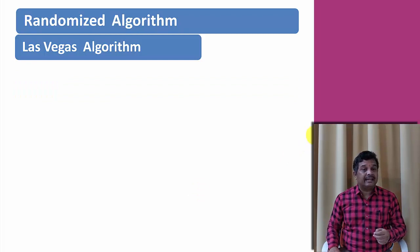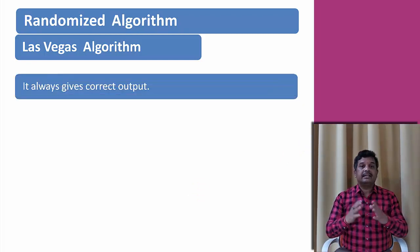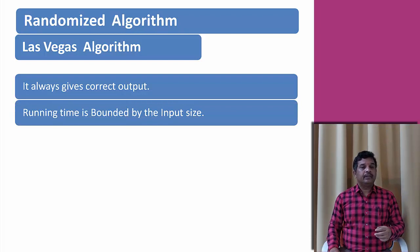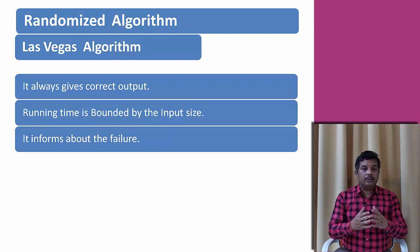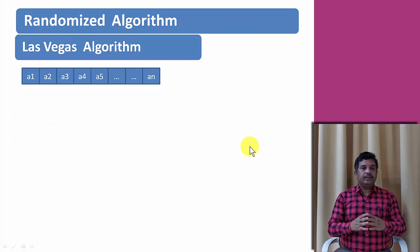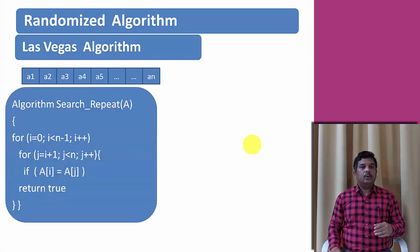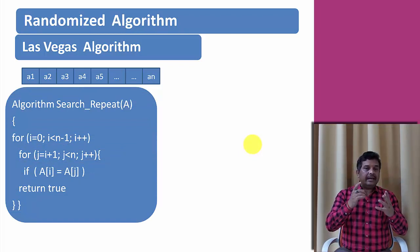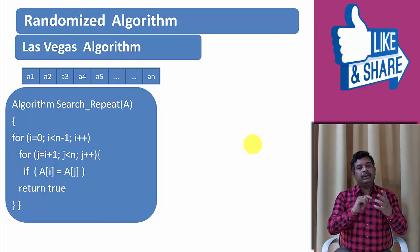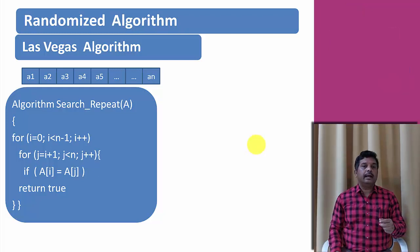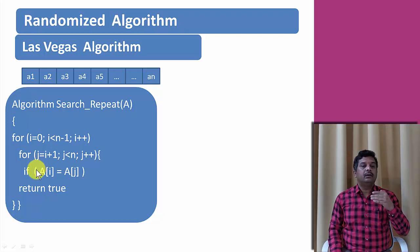The Las Vegas algorithm always gives the correct output. Its running time is bounded by the input size, and it sometimes informs about the failure of the algorithm. For example, given an array A1 to An, if we want to find how many repeated data there are, we can use a search operation: compare the first element with the second through nth element, then the second element with the third through last, using two nested loops — comparing all repeated elements.